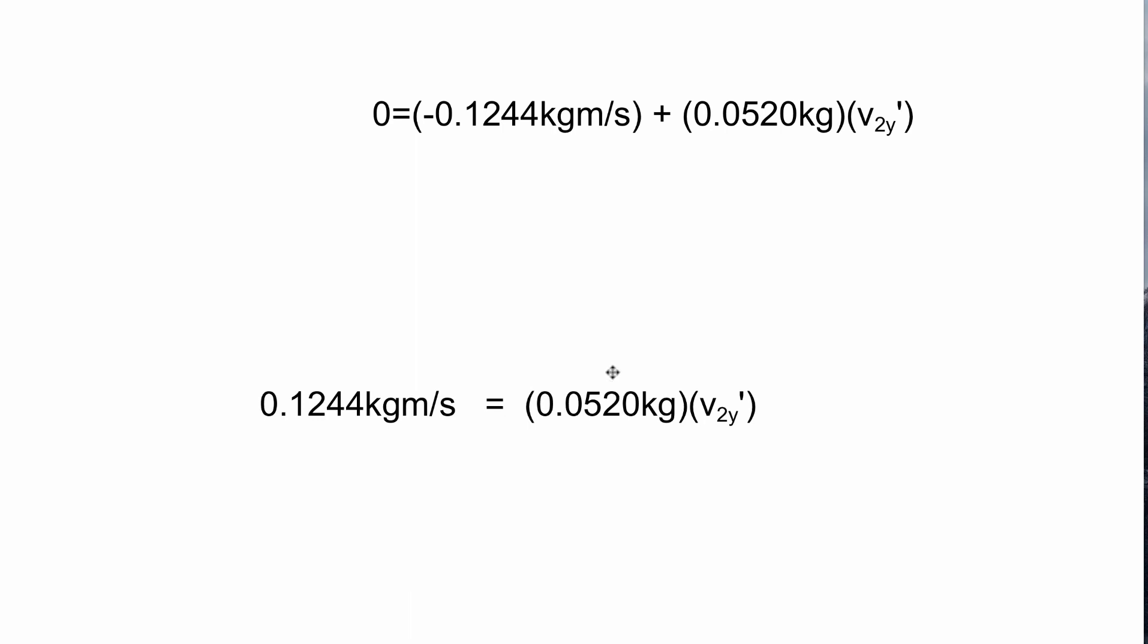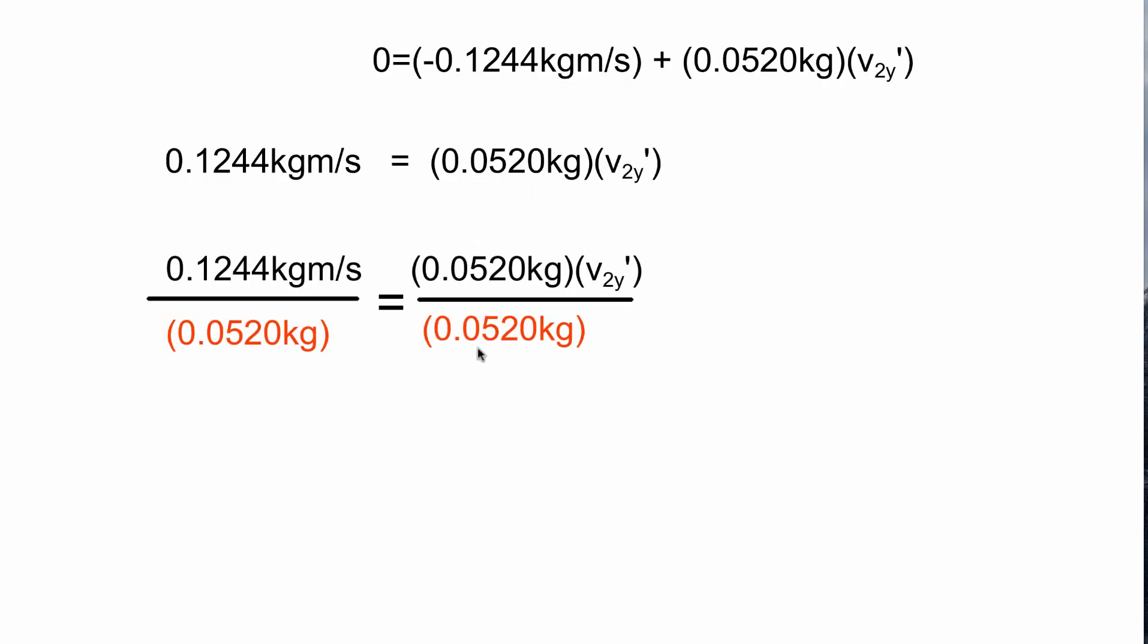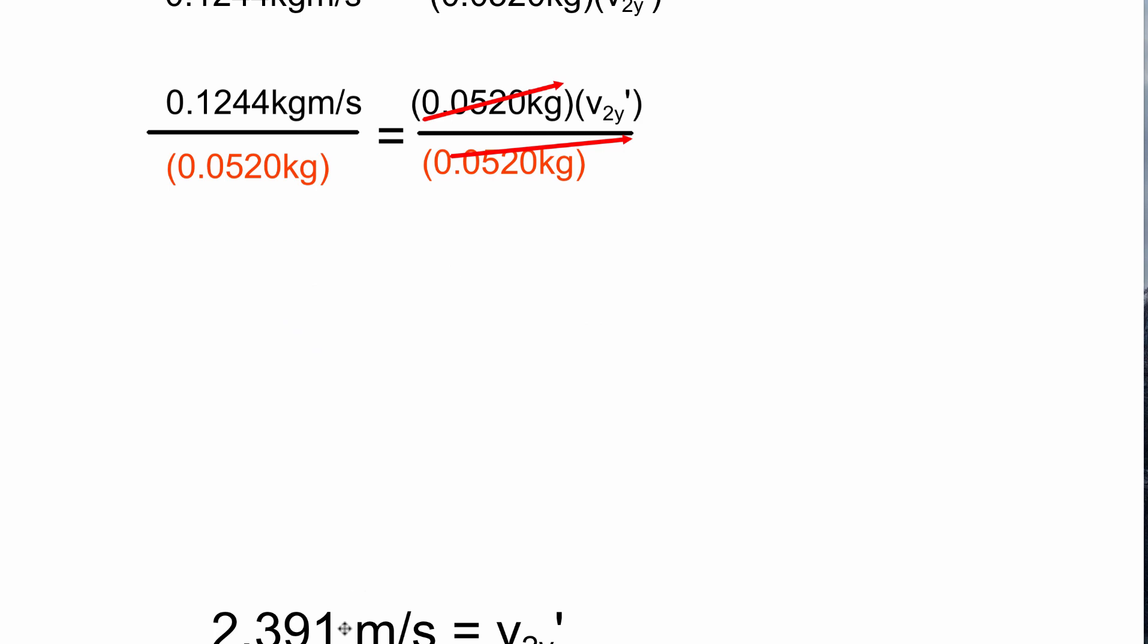If we add it to both sides we get 0.1244 kilogram meters per second on the left side. We've got this term on the right. So now we divide both sides by 0.0520 kilograms. On the right hand side they go away and on the left hand side we can do this division. When we divide both sides by the 0.0520 kilograms we get v2y prime is 2.391 meters per second.